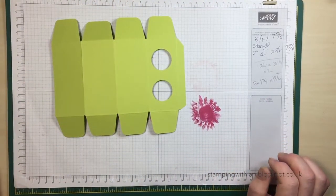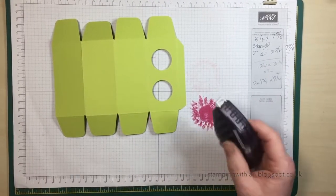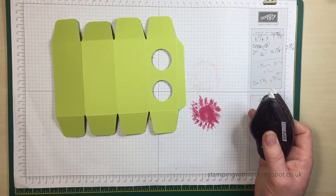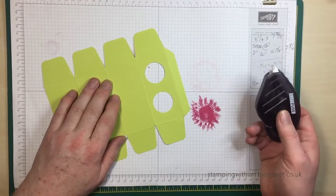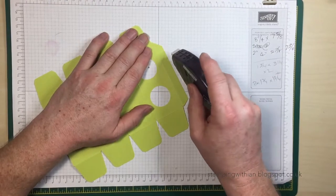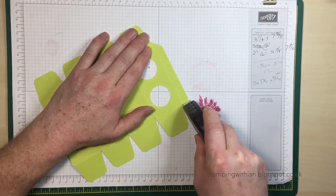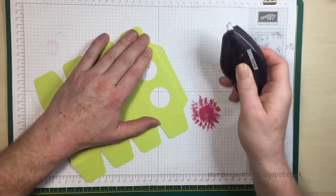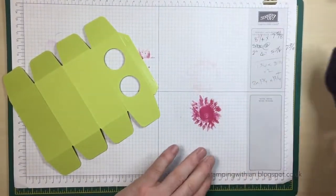Right, adhesive. I'm going to use some Fast Fuse on this for speed - you can use any adhesive you'd like: wet glue, glue gun, tape. So I just run some down there. I love my Fast Fuse. I'm so sad it's retiring. It took me a while to get used to it, but now I just love it.